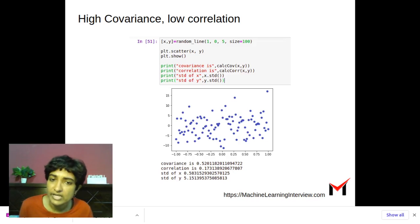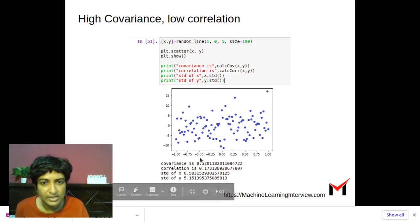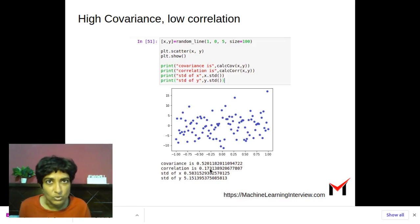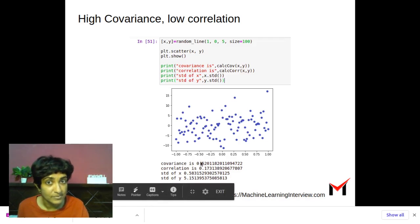When we look at both the correlation and covariance, we see that the correlation is 0.17, which is pretty low, close to 0, and that's what we expect. The covariance is higher than before, surprisingly. It's 0.52. Why is this so?